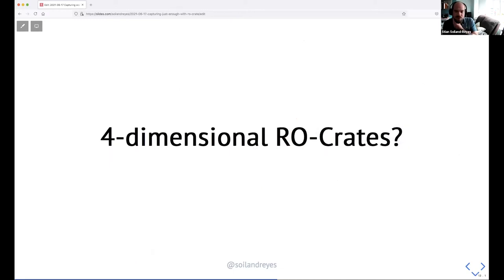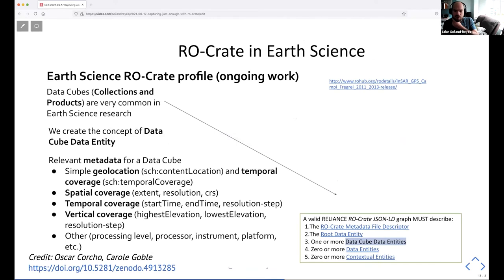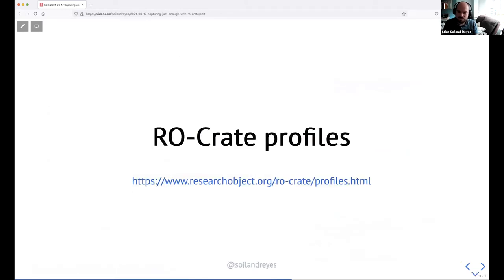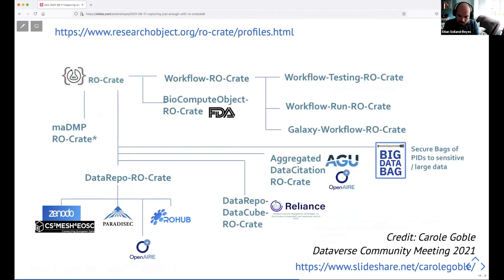An interesting area is earth sciences, which are adapting RO-Crate by adding dimensional aspects — not just spatial and temporal coverage, but even vertical coverage, for example in a rainforest with different levels. They're extending RO-Crate to include that. RO-Crate is extensible, and we're now formalizing profiles to express what to expect in a certain type of RO-Crate. Many different profiles already exist — some de facto — and we're now working on expressing those more formally.